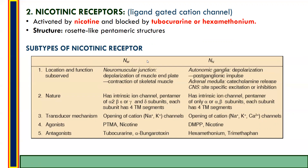There are two subtypes of nicotinic receptor: NM and NN. NM is located at the neuromuscular junction, where it causes depolarization of the motor end plate, leading to contraction of skeletal muscle. NN is located at three regions: autonomic ganglia, where it causes depolarization and generation of postganglionic impulse; adrenal medulla, where it causes catecholamine release (adrenaline, noradrenaline, and dopamine); and CNS, where it causes site-specific excitation or inhibition. Structurally, NM consists of alpha-2, beta, epsilon (or gamma), and delta subunits, while NN consists of only alpha or alpha-beta subunits. Each subunit has four transmembrane segments.